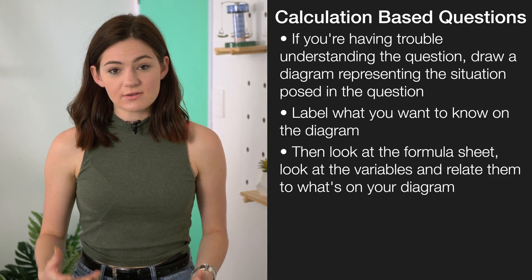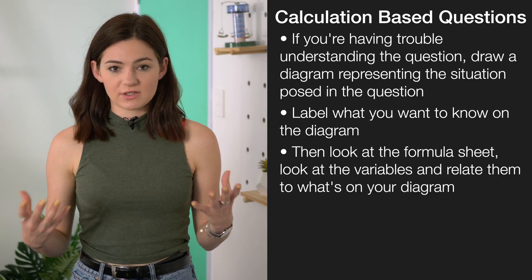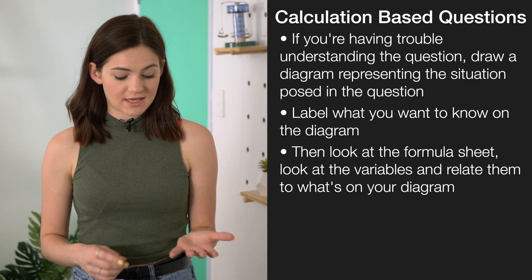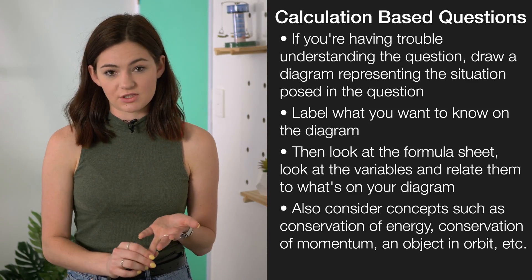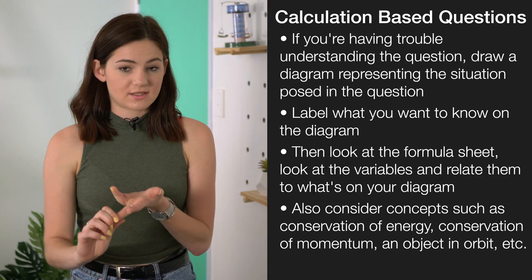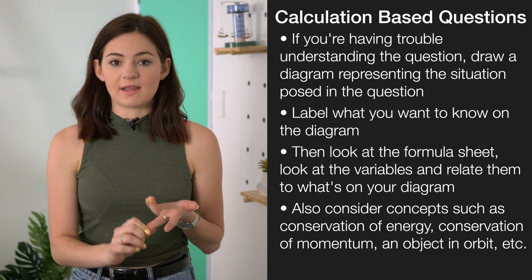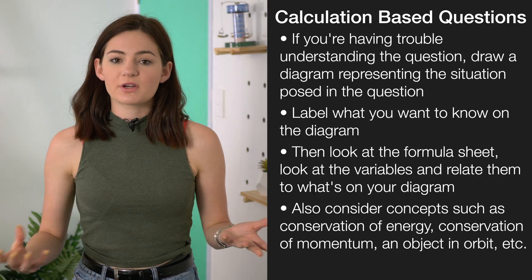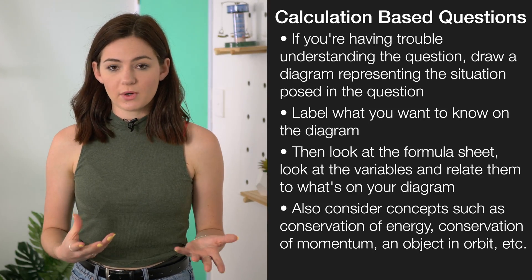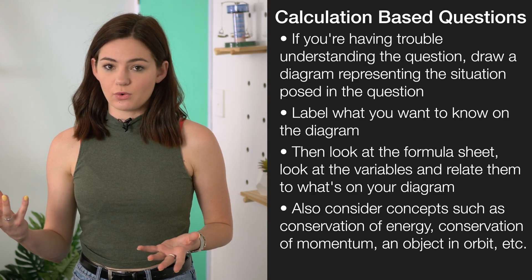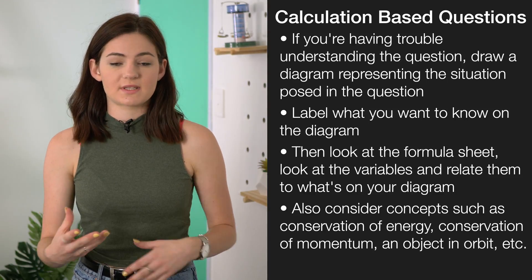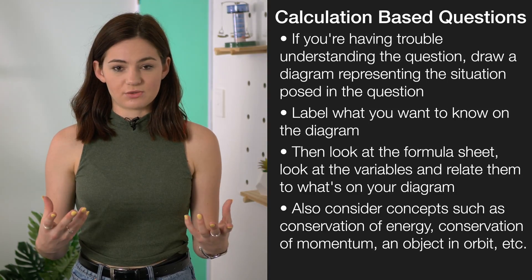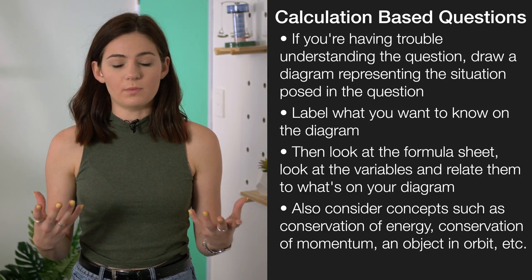If you're still stuck, you may want to think about different types of concepts, such as conservation of energy, conservation of momentum, or whether it's referring to something that's in orbit. For example, if you're talking about a satellite in orbit, you're going to want to pull out the equations for the centripetal force and the gravitational force, because in orbit these two forces will be equal.